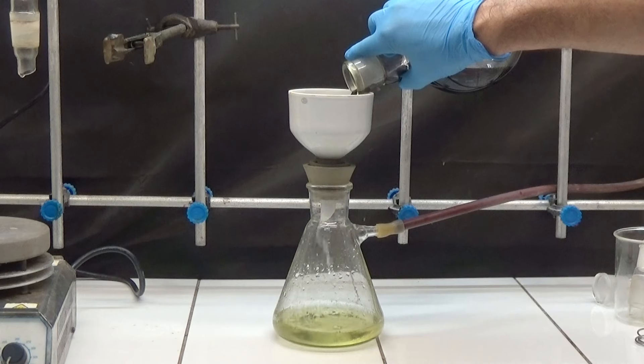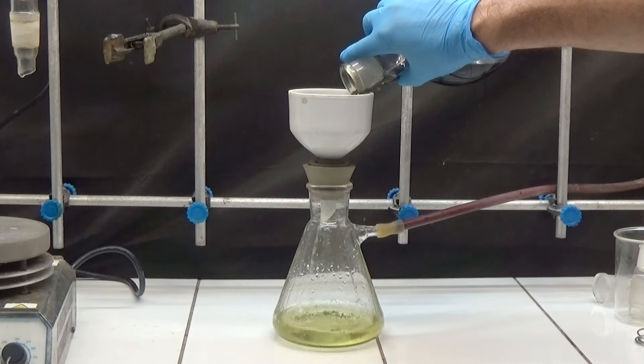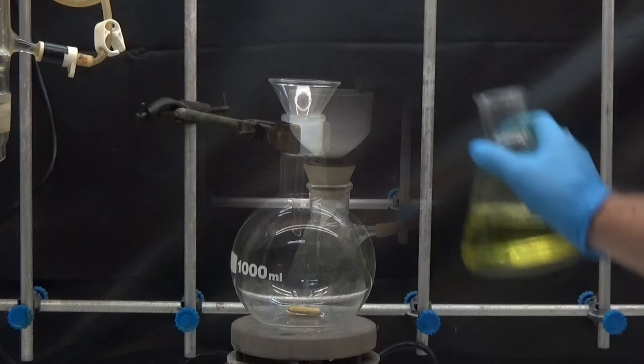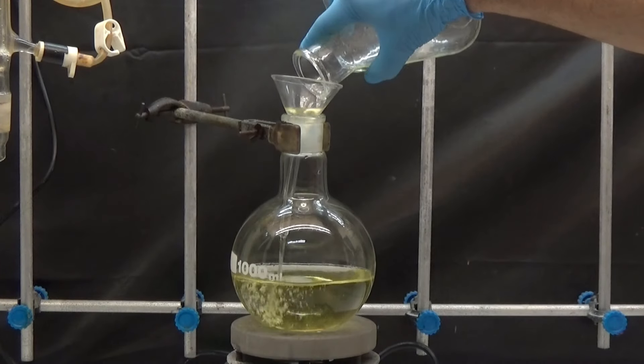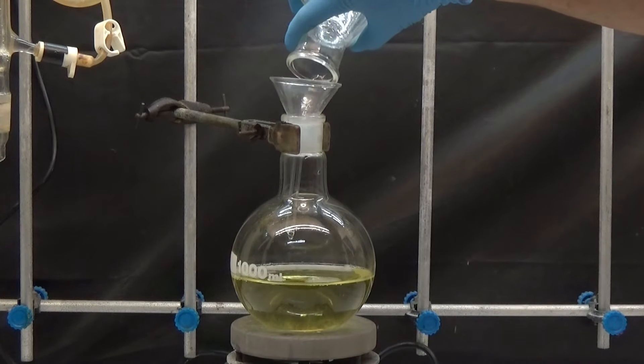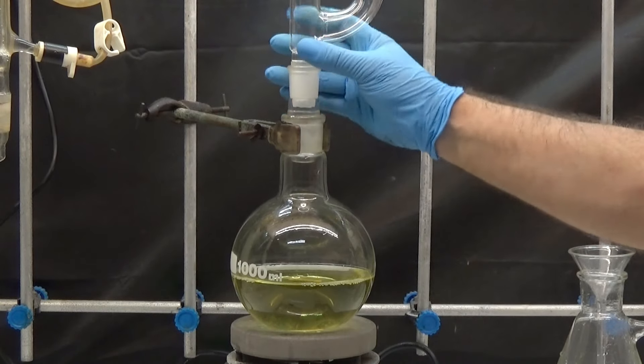The yellow filtrate is neutralized with 25% ammonia to a slightly alkaline pH. For this operation, we will mount a glycine joint.